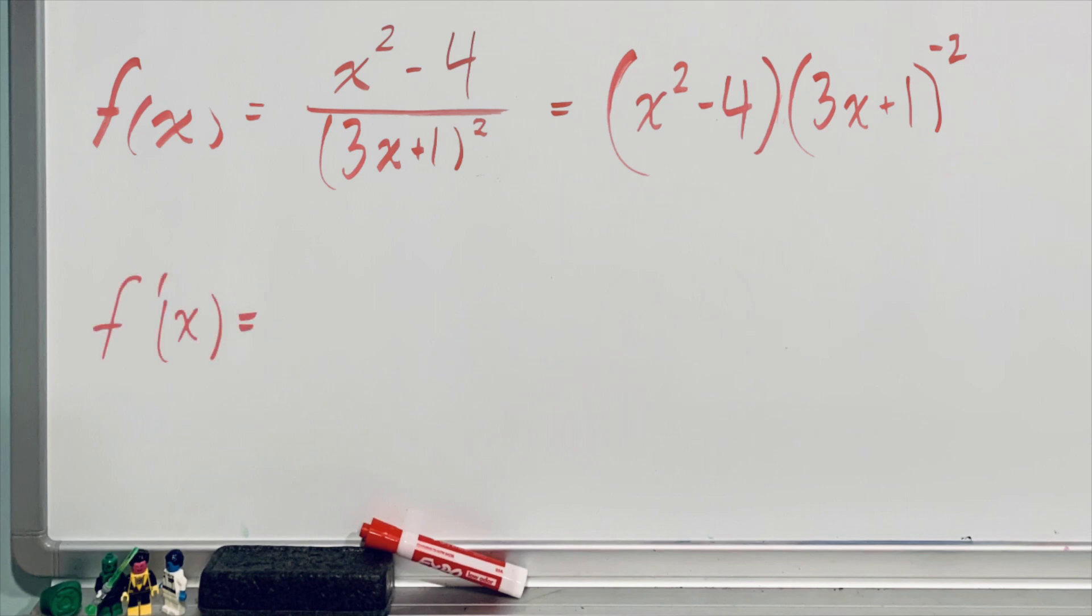Applying this process results in the derivative of the first function, which is 2x, multiplied by the second function, which stays as it appears in the original expression. We then add the first function as it appears in the original expression and multiply by the derivative of the second function, which